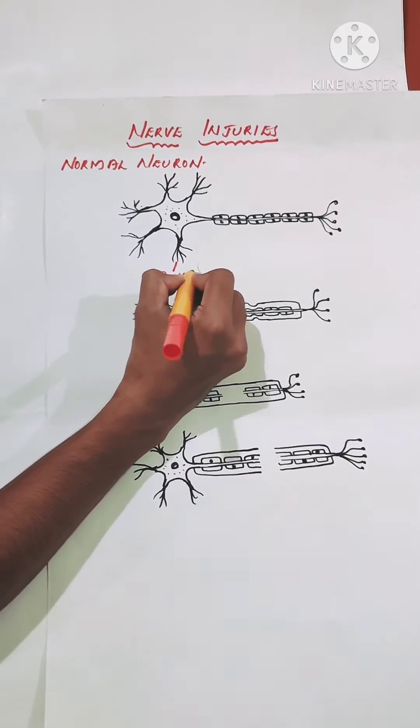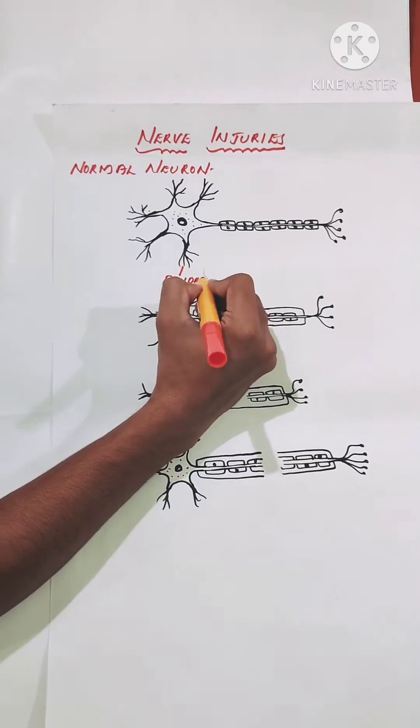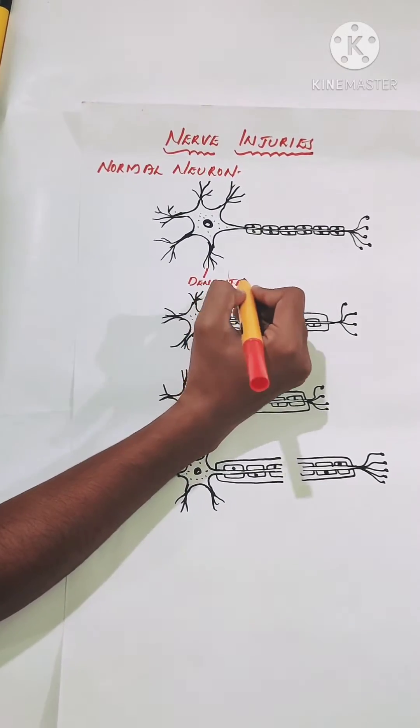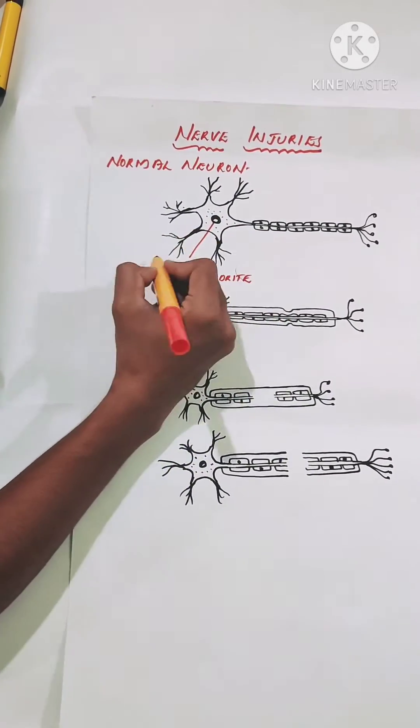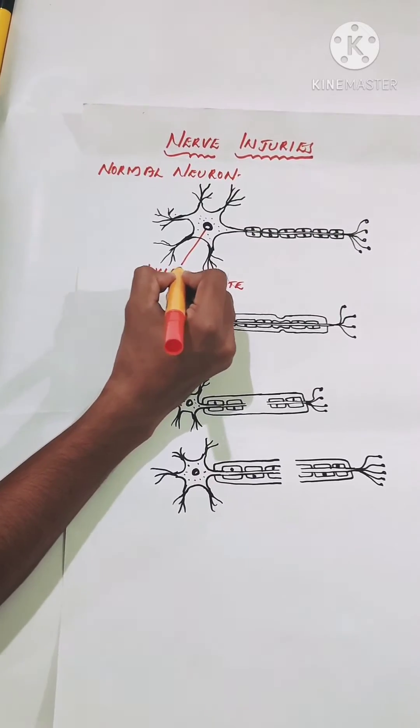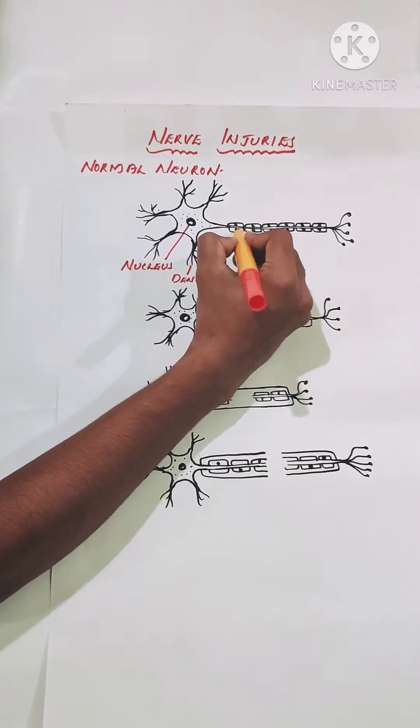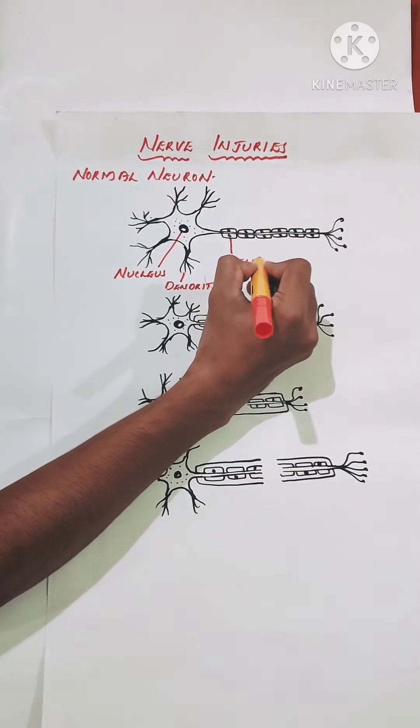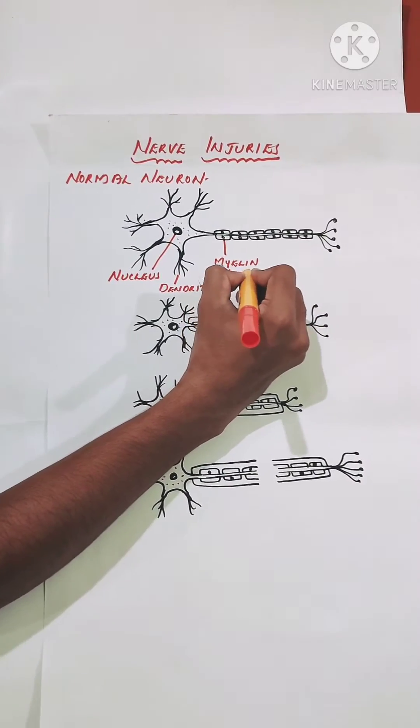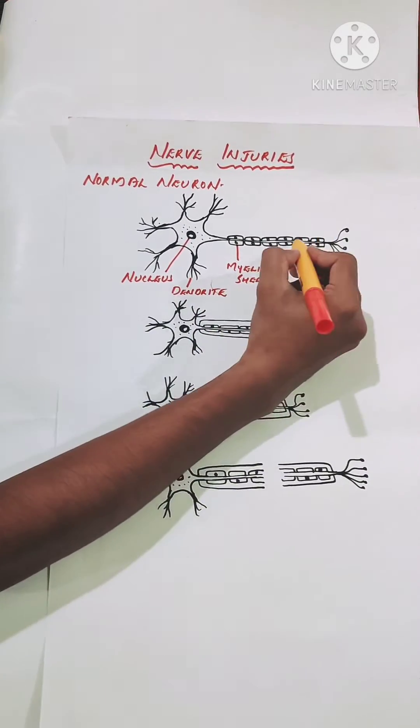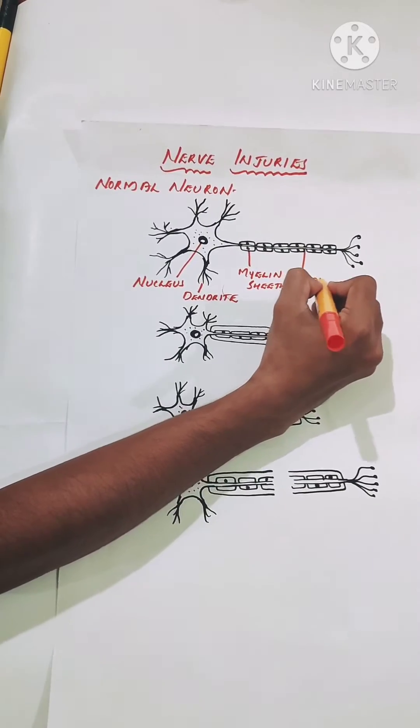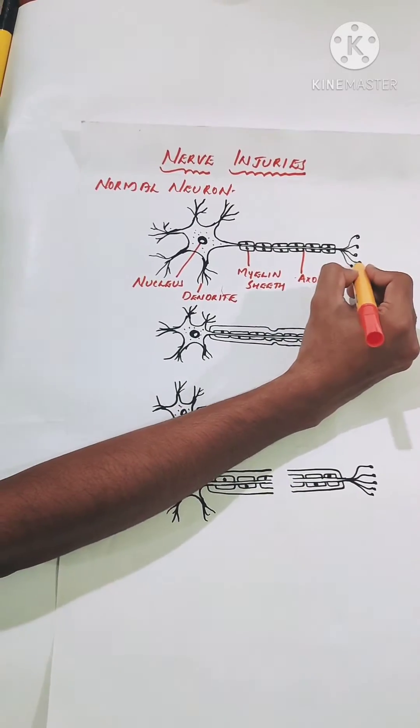A neuron has three main distinct parts including the cell body, axon, and dendrites. Here we have the nucleus. This is the myelin sheath which covers the axon. Here is the axon and these are the axon terminals.